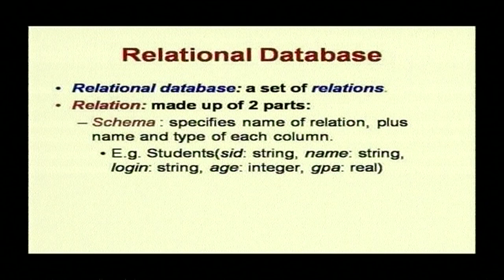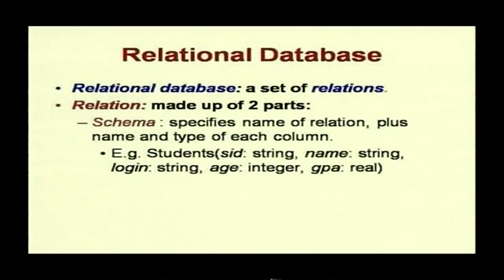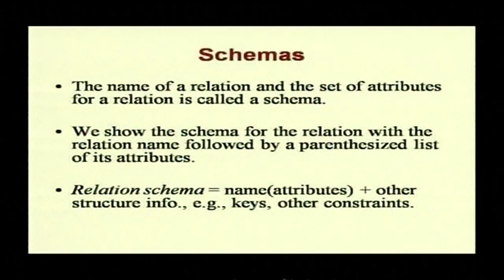The relational database consists of a set of relations, and each relation consists of two parts. The schema specifies the name of the relation plus the name and type of each column. For example, a Students relation has five attributes, and for each attribute you specify the domain — string, string, string, integer, or real. The schema specifies the attributes and the domain of each attribute. The name of a relation and its set of attributes is called the schema.